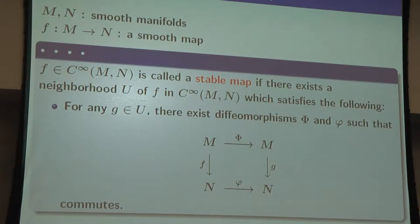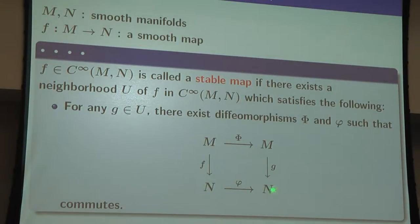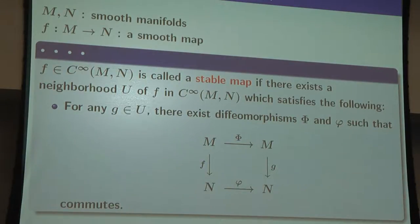Now I explain the stable map. Suppose M and N are smooth manifolds and F is a smooth map from M to N. If F and G are two maps from M to N, and there exist diffeomorphisms on source and target manifolds such that this diagram commutes, then we say F and G are left-right equivalent — meaning after diffeomorphisms of source and target manifolds, the two maps are the same.